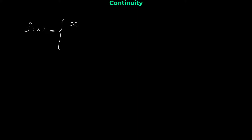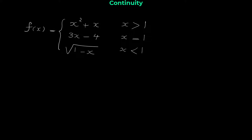Let me show you the first example. Consider this function: f of x equals x² + x when x is greater than 1; when x equals 1, the function is 3x − 4; and when x is less than 1, the function is the square root of 1 minus x. We have a piecewise function — a function that doesn't have one single rule.